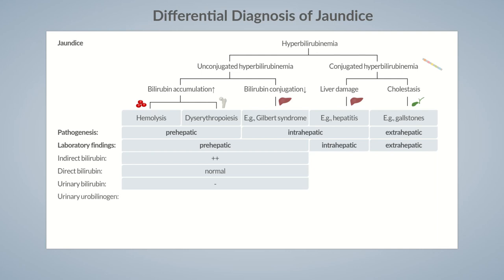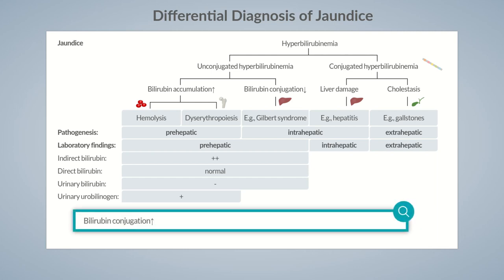In contrast, urinary urobilinogen levels are elevated. Although the liver's capacity to conjugate bilirubin has been reached, there's an increase in bilirubin conjugation, resulting in higher bilirubin excretion into the bile. As a result, more urobilinogen is produced in the colon, which is reabsorbed, causing an increase in serum urobilinogen levels. A higher fraction of urobilinogen than usual is excreted into the urine, which can be detected using the urine dipstick.